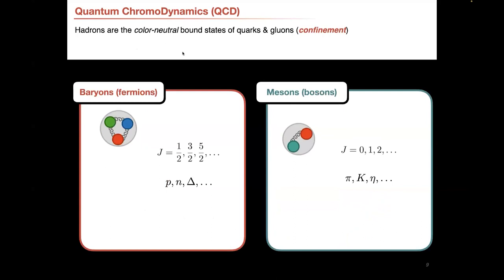Hadrons are the color-neutral bound states of quarks and gluons. We don't observe free color — we have only observed neutral combinations of color: red plus green plus blue is a colorless object, or red anti-red is a colorless object. This is the main idea behind confinement. There are two general classes of hadrons we observe: baryons, which are fermions — spin-1/2 particles — with examples including the proton, neutron, and delta; and mesons, which are bosons — integer spin particles — with examples being the pion, kaons, and etas.